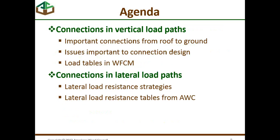Today we want to look at connections in two directions: a vertical load path and a lateral load path. We did the same thing last week when we looked at load paths, and now instead of just looking at the load path, we want to spend more time focused on where we make connections, how we make them, and what the loads are. We intend to take loads from the roof to the ground so the soil dissipates the loads. We'll use load tables from the Wood Frame Construction Manual, and hopefully I can make a good connection — no pun intended — with where you might find this information in the manual.